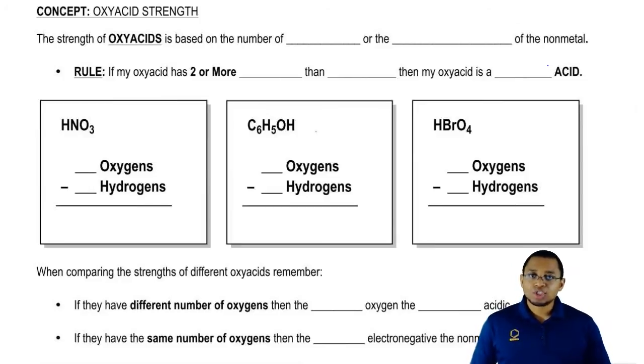Because again, a strong acid doesn't need an ice chart in order to find pH. A weak acid on the other hand does require an ice chart to figure out pH. So it's imperative that you not only know how to identify things as either binary or oxy, but be able to identify them as weak or strong.